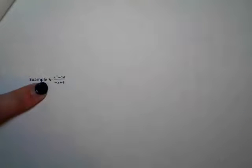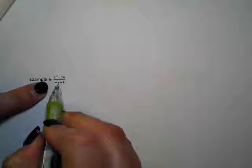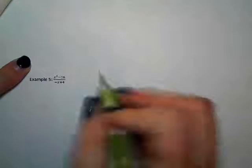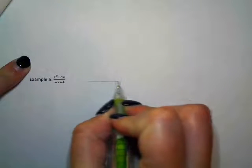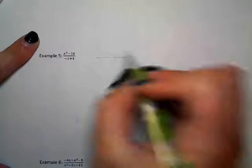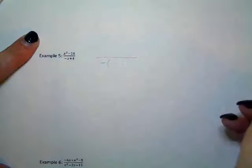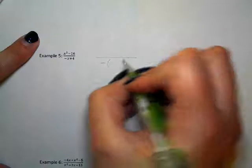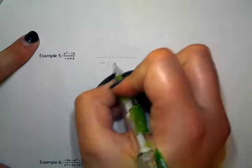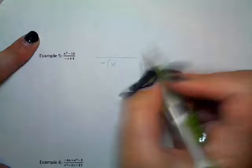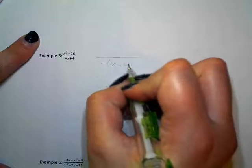If you look at the bottom, you can see there is a negative in the front, so we're going to factor out a negative one. I'm just talking about the bottom here. If you factor out a negative one on the bottom, what do you have left over? X minus four — positive X because we factored out a negative, positive X and a negative four.